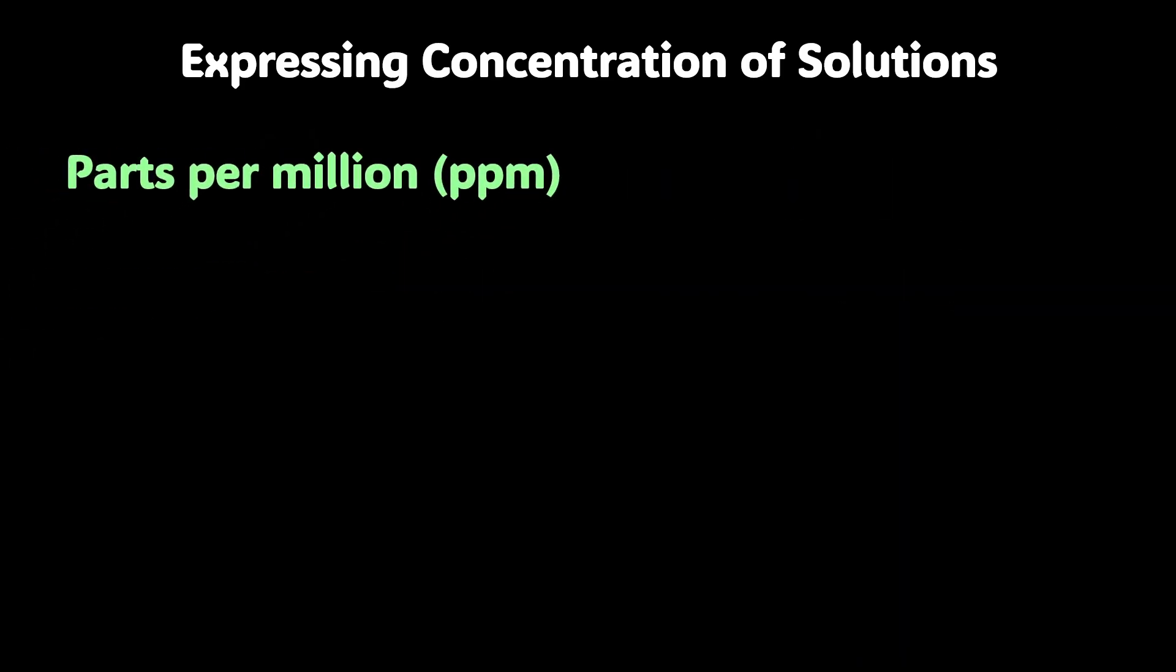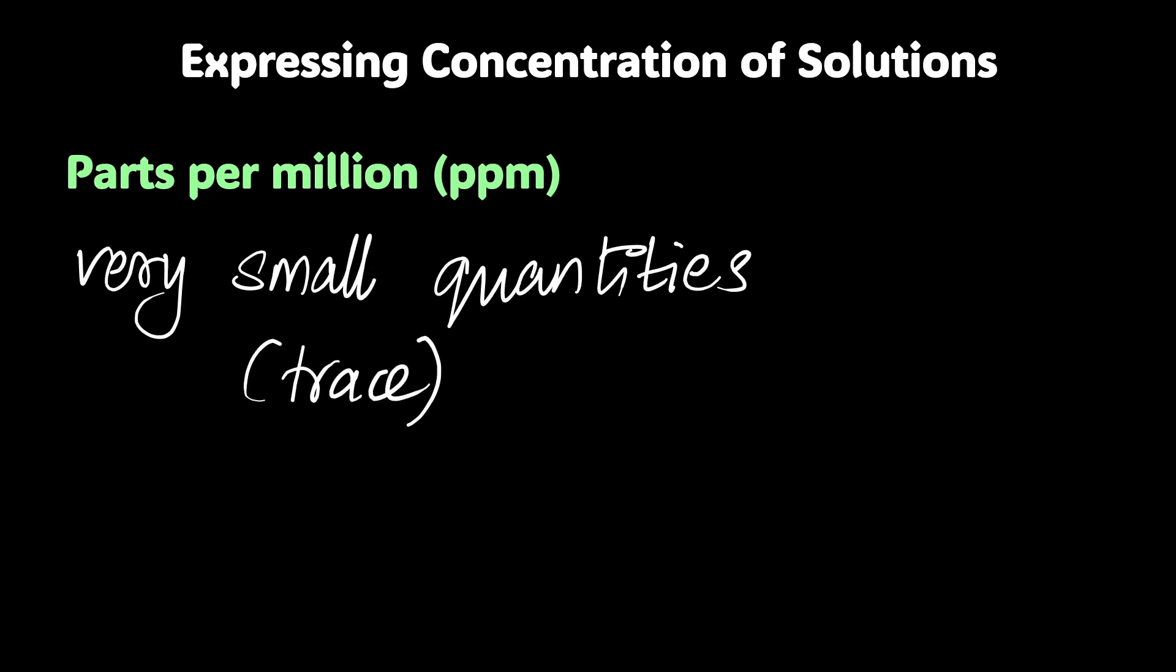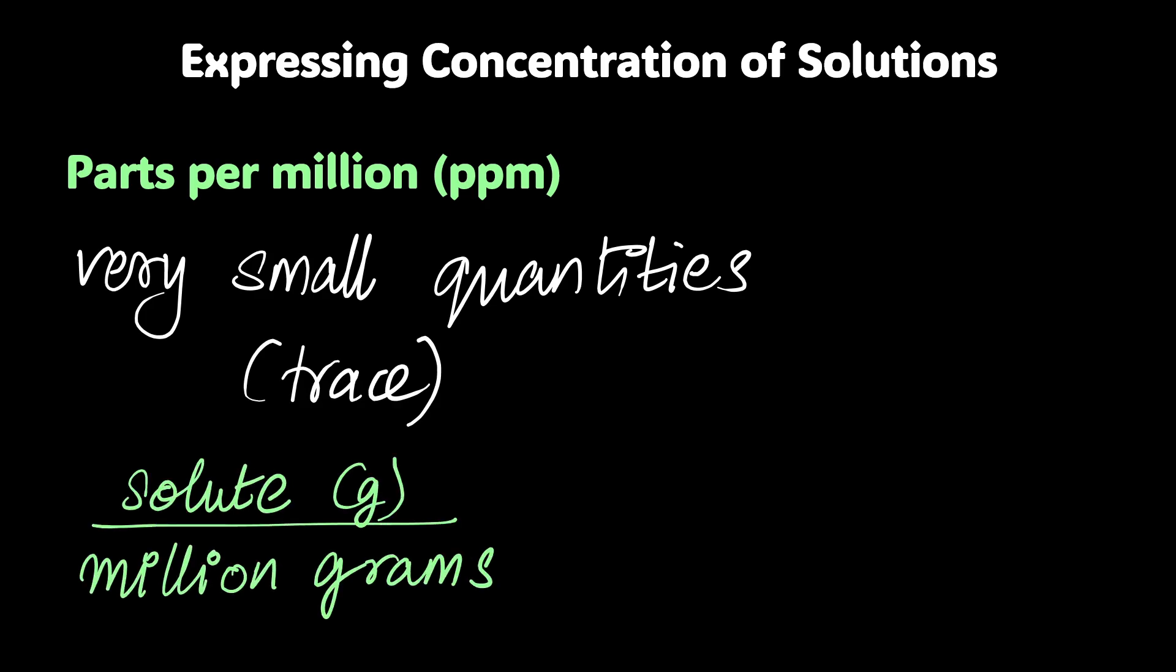Parts per million. Millions are a really big number. So I'm talking about a part in a million parts, it's like a needle in a haystack. So it's a very small quantity. We're talking about trace amounts most of the time. So I'm going to write down a definition, see what makes sense to you. So if I talk about grams, I can define this as the solute mass in grams in a million grams of solution. That's a really large quantity of solution.